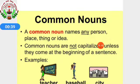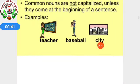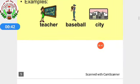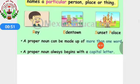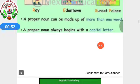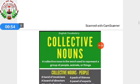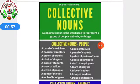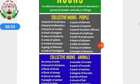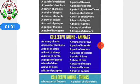Only if it is the beginning of the sentence, then we have to start it with a capital letter. Then we learnt about proper nouns — that we give a special name to a particular person, place, or thing — and it always starts with a capital letter. Then we learnt about collective nouns, which is the group of people, group of animals, and group of things.